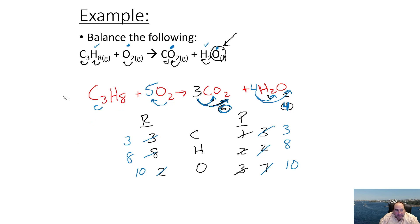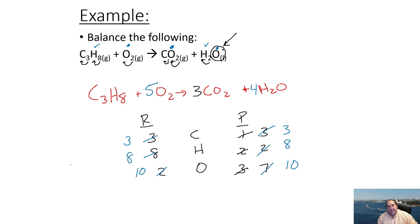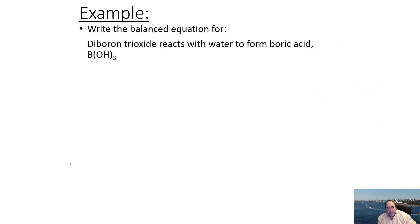Now we have the balanced equation. My personal approach is to fix the easiest thing first and save elements that appear in multiple places — like oxygen was here — to the end. Now let's try a few more. This next one involves words, so remember: first write the formulas correctly, then balance the equation. Take a few moments and see what you come up with.